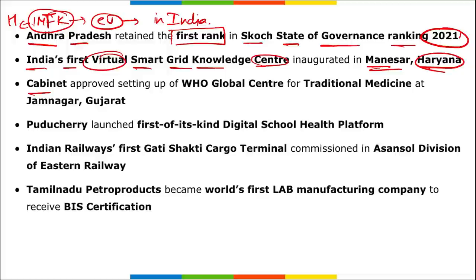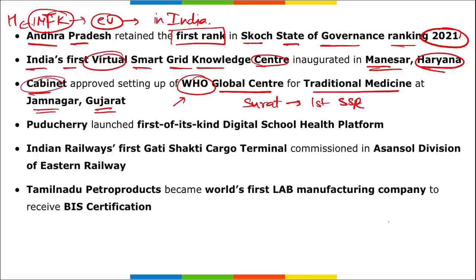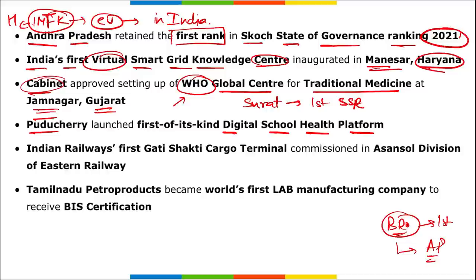The cabinet has given approval for setting up a Global Centre for Traditional Medicines at Jamnagar, Gujarat, with the help of the World Health Organization. In Surat, the first steel slag road was set up on a trial basis, and later BRO developed the first steel slag road in Arunachal Pradesh. Puducherry has launched the first-of-its-kind Digital School Health Program and also observed the first-ever beach festival, I Sea Pondi.